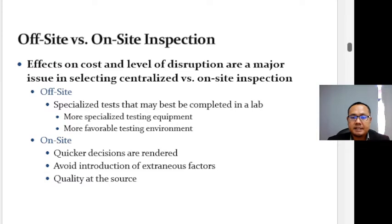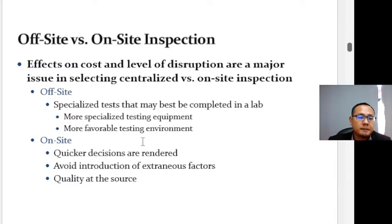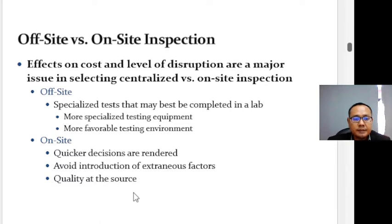Some situations require inspection to be performed on-site. For example, inspecting the hull of a ship for cracks requires an inspector to visit the ship. Off-site versus on-site inspection depends on cost and level of disruption. Off-site inspection may benefit from specialized testing equipment and a more favorable testing environment, while on-site inspection allows quicker decisions, avoids external factors, and supports quality at the source.